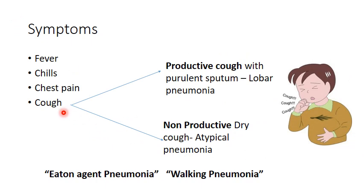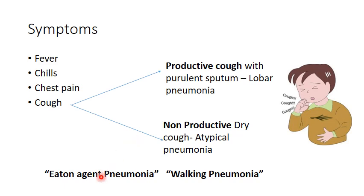The symptoms of pneumonia include fever, chills, chest pain and cough. All symptoms are more or less the same in both types of pneumonia. However, cough is the symptom that differentiates lobar from atypical pneumonia. If the cough is productive with purulent sputum, it is lobar pneumonia. If the cough is non-productive and dry, it is atypical pneumonia. This pneumonia is also called Eaton agent pneumonia or walking pneumonia.